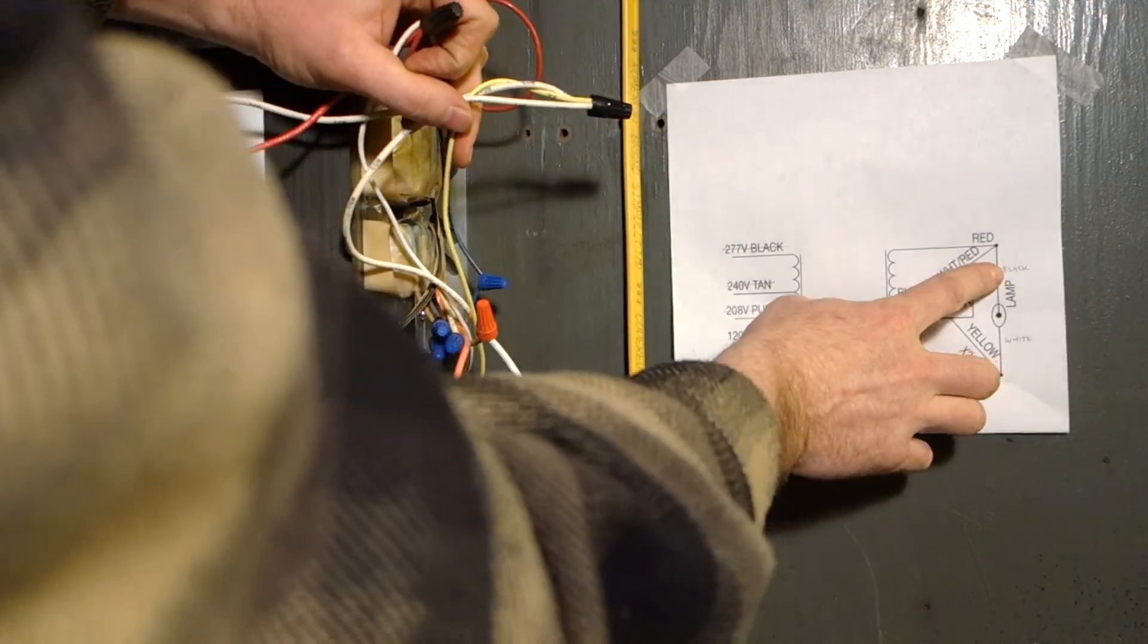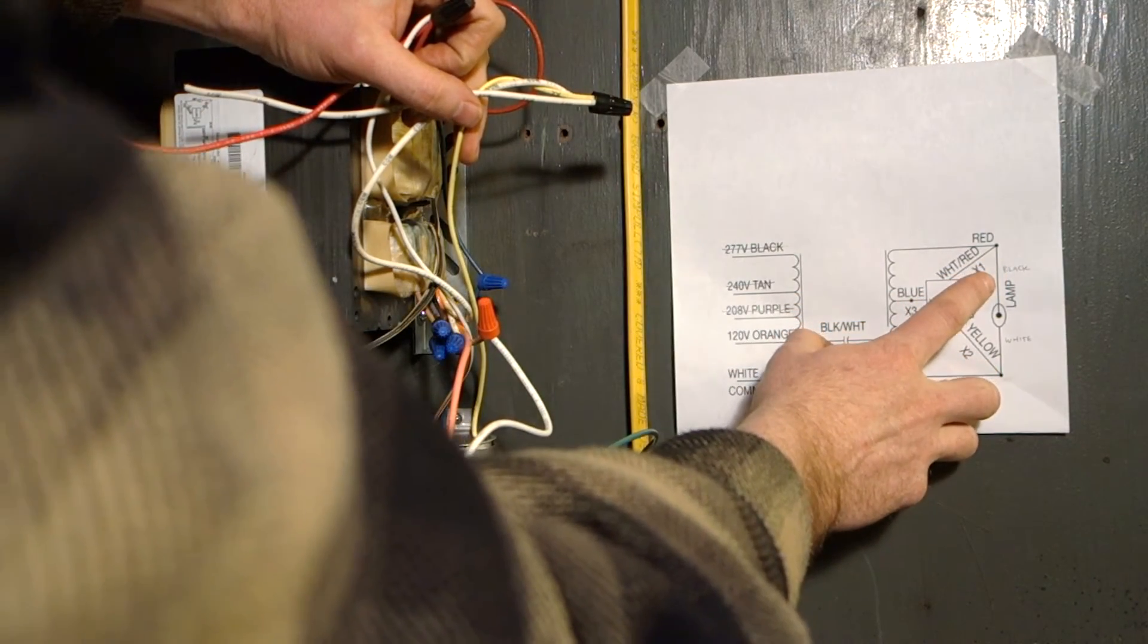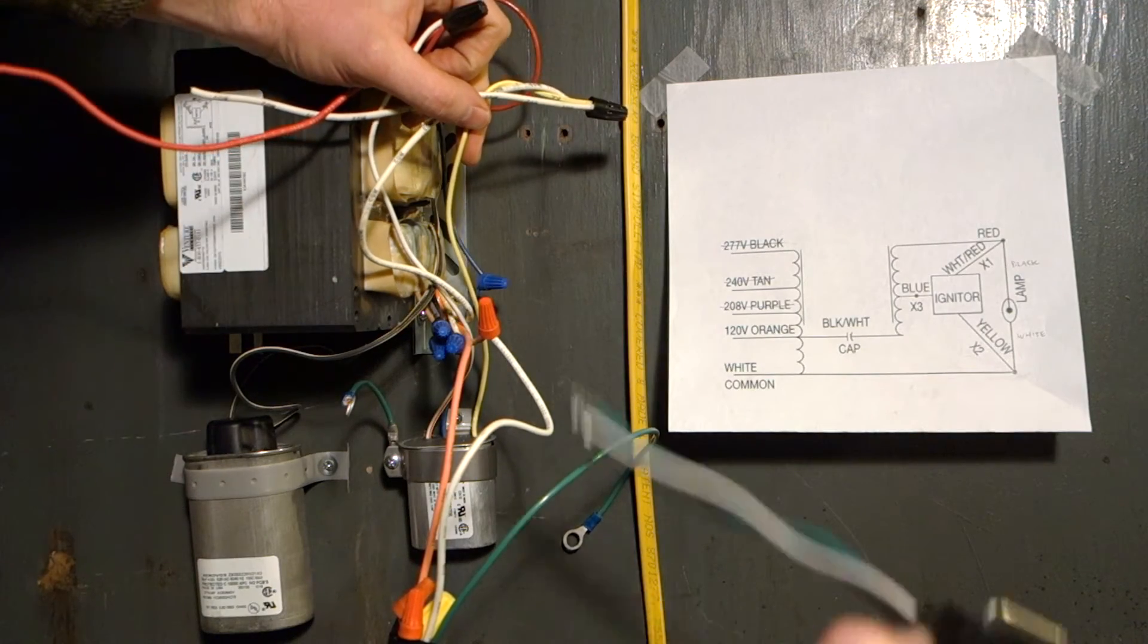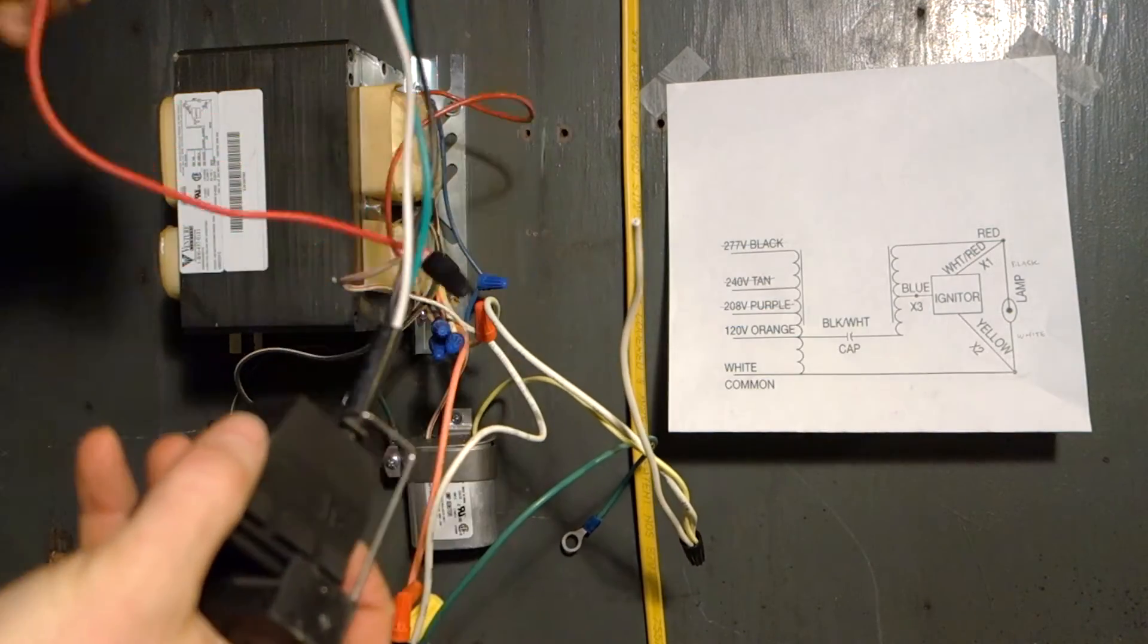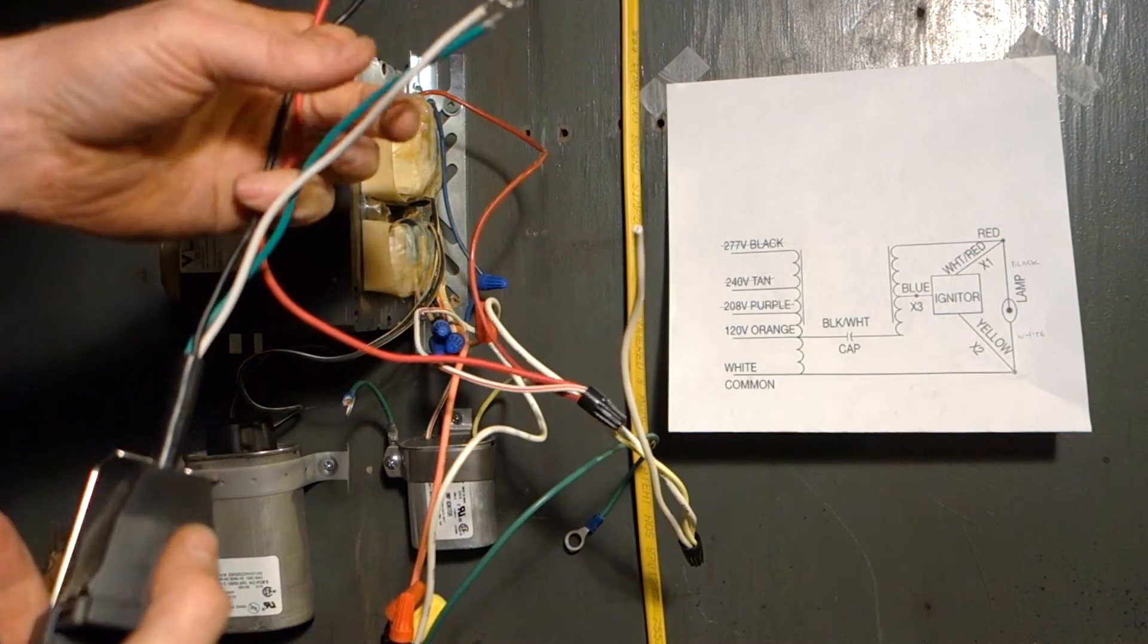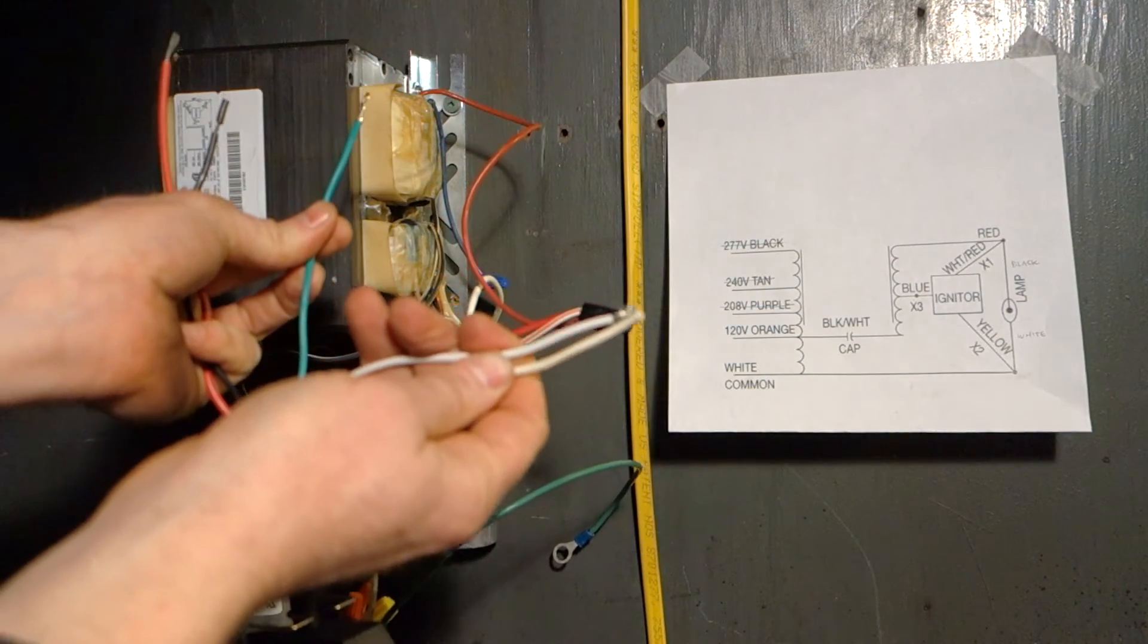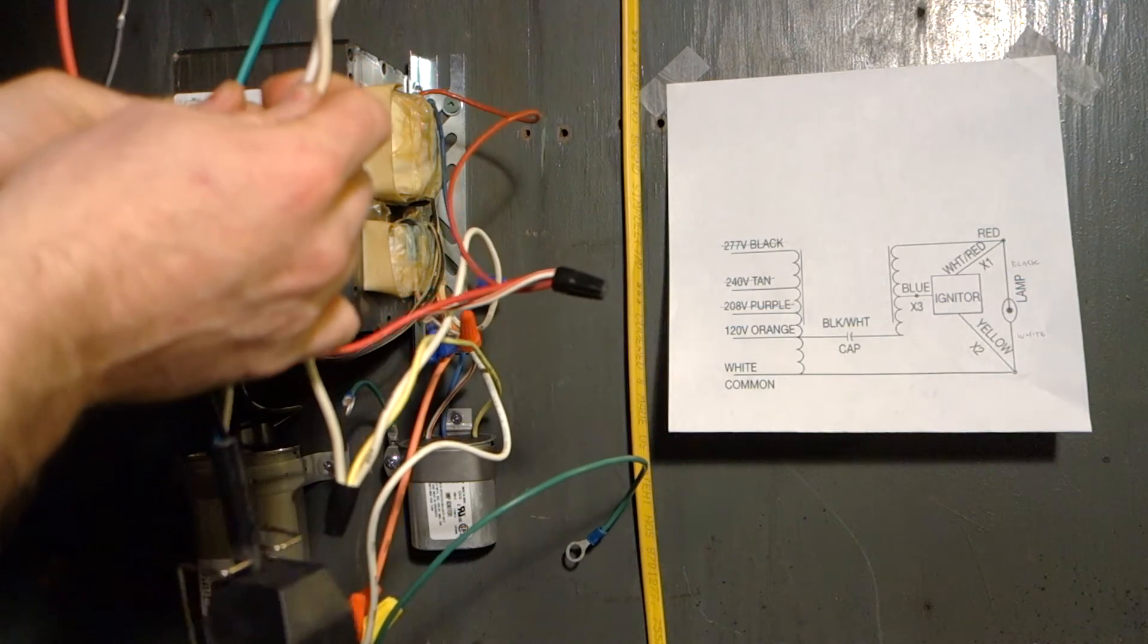So all we're going to do is take black hotline coming from our reflector adapter and connect it to the red hotline, and then white common, and then we have one more grounding point. And then that'll be it, and we'll have the adapter all connected.